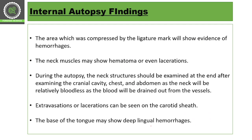Now moving from external to internal appearances — all previous features were visible externally. For internal postmortem appearances in strangulation, the body must be cut open. The area compressed by the ligature will show evidence of hemorrhages, so internal hemorrhage will be seen around the ligature. The neck muscles may show hematoma or even lacerations.